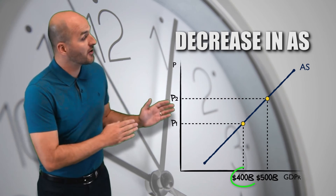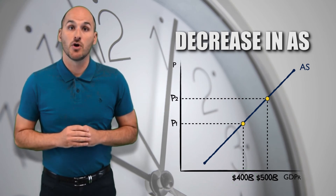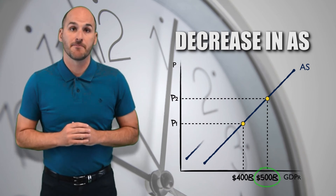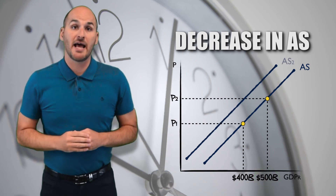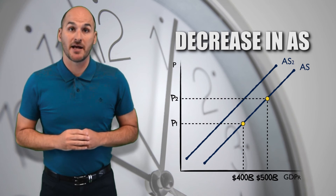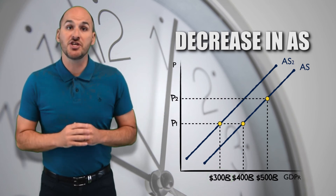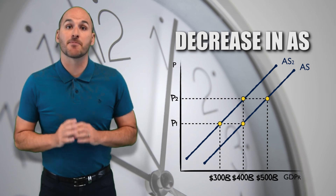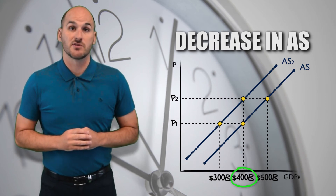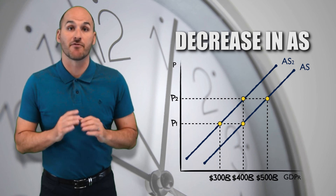At a price of P1, a real GDP output of $400 billion is supplied. At a price of P2, a real GDP output of $500 billion is supplied. But if short-run aggregate supply decreases, the real GDP output supplied at a price of P1 decreases to $300 billion, and the real GDP output supplied at a price of P2 decreases to $400 billion. Notice that the aggregate quantity supplied decreased at every price level.